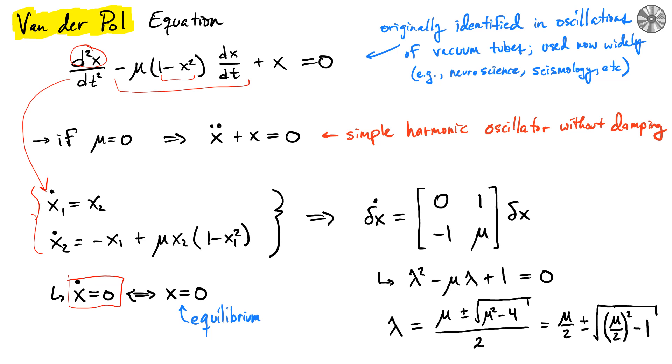Around that particular equilibrium, we find the Jacobian. The general Jacobian is going to be the derivative of this first function with respect to x₁, which is zero, derivative with respect to x₂, which is one. The derivative of this thing with respect to x₁ gets a little messy, but we have, for example, minus one, and then you're going to have two terms—one with this x₁ squared, so that's going to give you a minus x₂μx₁.